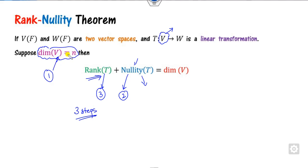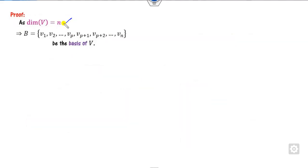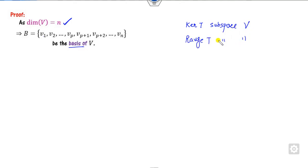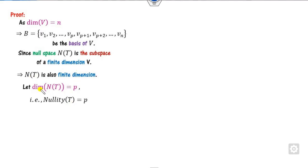It is given that the dimension of V is N, which means it consists of N vectors as a basis: V1 up to VN. We know that the kernel of T is a subspace of V. Since V is finite-dimensional, the nullity is also finite. We assume the dimension of the null space is P, so the nullity equals P.